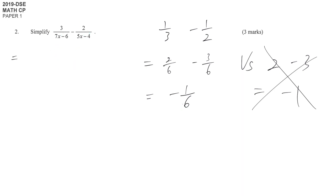And then we can go back to this question. 3 over 7x minus 6, minus 2 over 5x minus 4. What we did in primary school gives us an idea of what to do. First, since the denominators are not the same, we are going to multiply something without changing the values, to make them the same denominator.